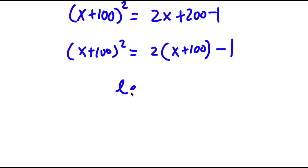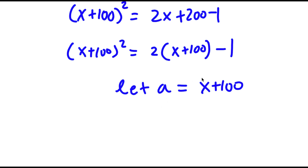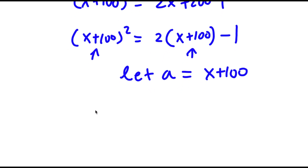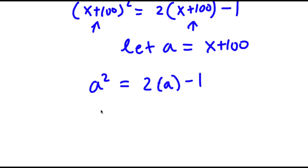I can factor out 2 from 2x plus 200, giving 2 times x plus 100, minus 1. Now I'm going to let the variable a equal x plus 100. Substituting a for x plus 100, I have a squared is equal to 2 times a minus 1, which is a squared equals 2a minus 1.